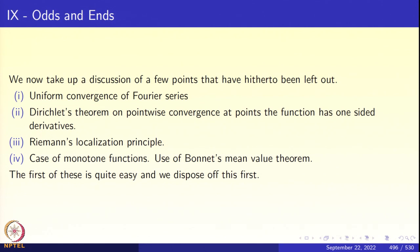What are the topics discussed in this chapter? First, uniform convergence of Fourier series — we give a sufficient condition for when the Fourier series of a 2π-periodic function converges uniformly to the given function. Second, we'll prove Dirichlet's theorem on pointwise convergence at points where the function has one-sided derivatives. Third, we discuss Riemann's localization principle, and fourth, we discuss monotone functions using Bonnet's mean value theorem, whose complete proof we provide since it is often omitted from modern textbooks.